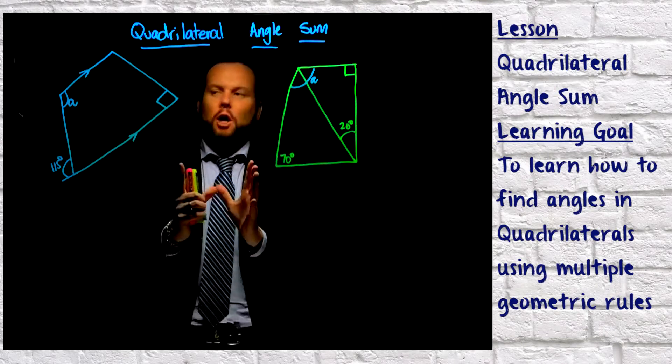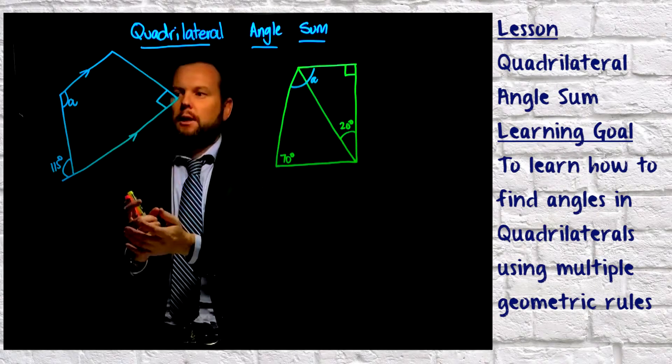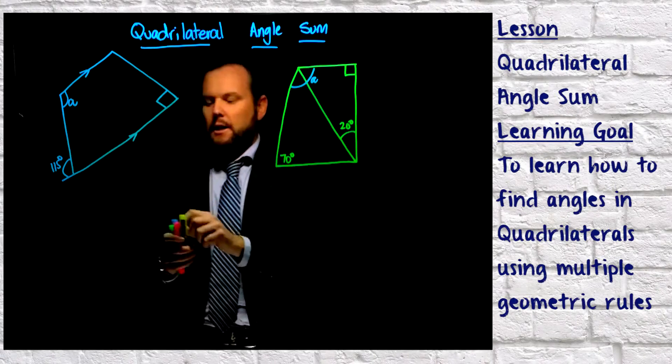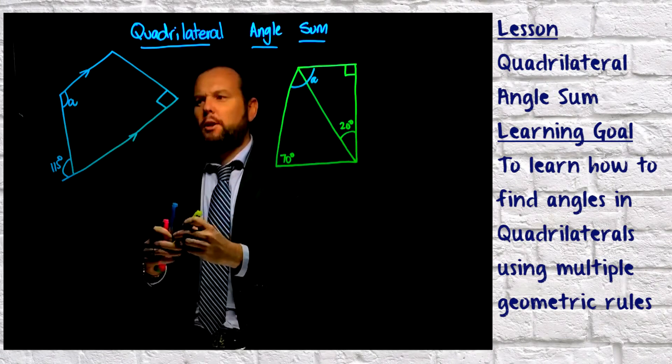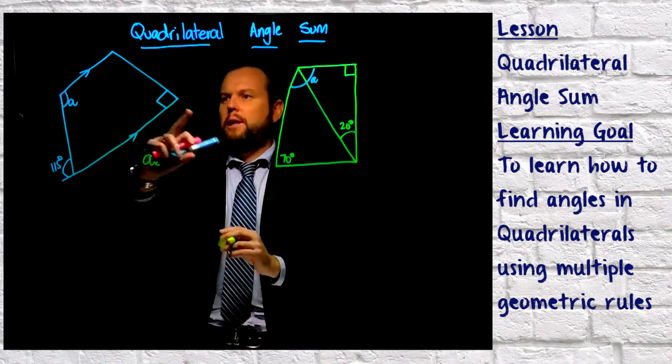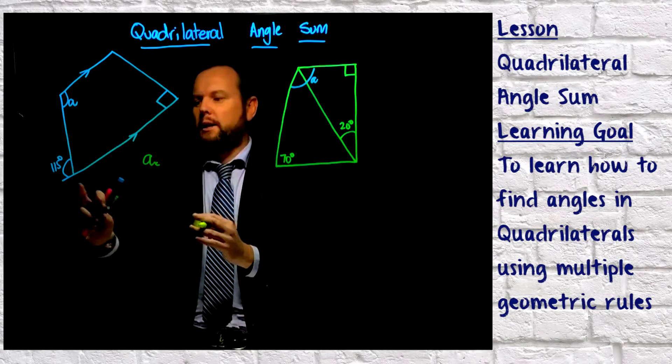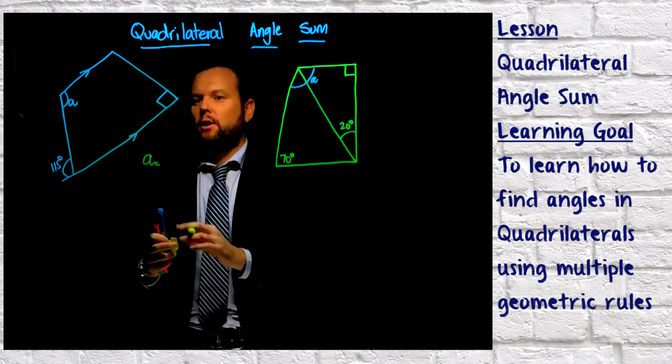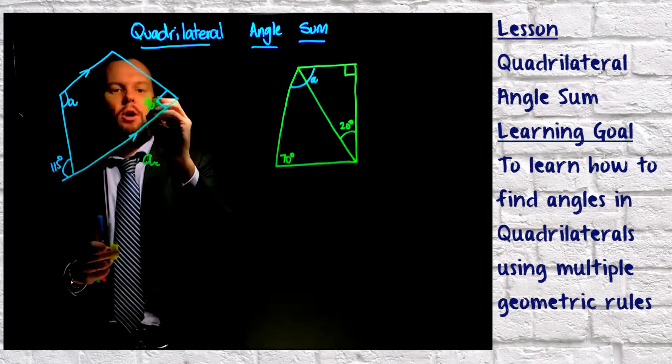So basically what we're going to do here is let's have a look at this one here first, and we want to find the measurement of A. Now a lot of people will probably look at this and go, well let's look at the angles that we know already. So this is 115 degrees here and we know that this is 90.